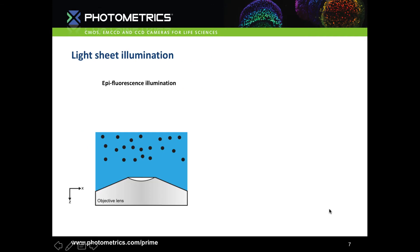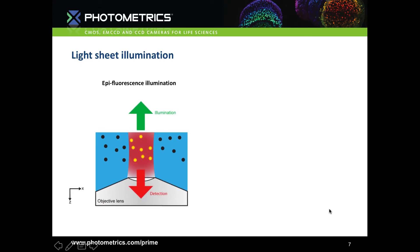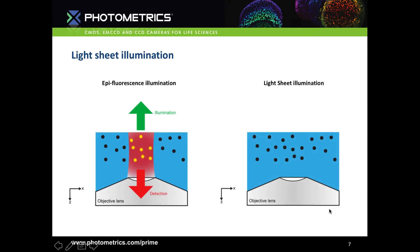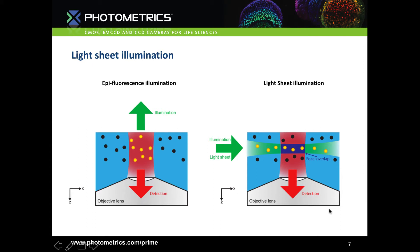The first thing to look at is how we get the light in. With epifluorescence we use the same objective for illumination and detection, illuminating the whole sample. With lightsheet illumination instead, we introduce the light from the side and image at the focal overlap for detection. So we're only illuminating the plane we're interested in, not the whole sample.